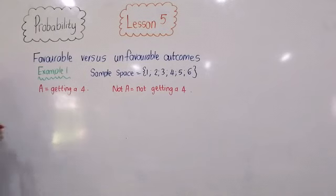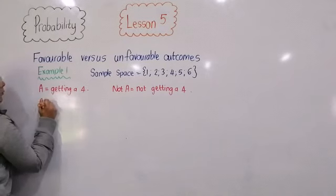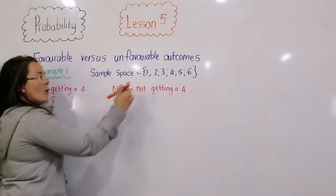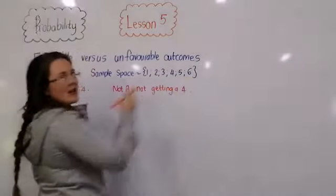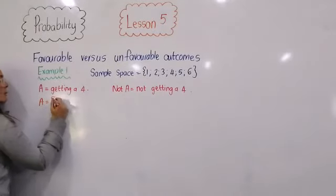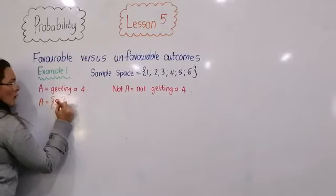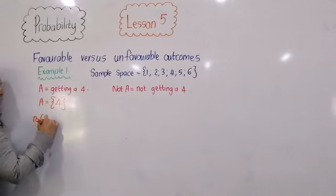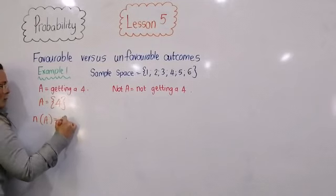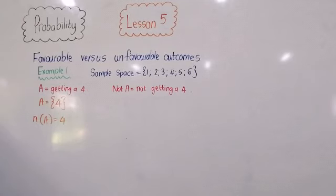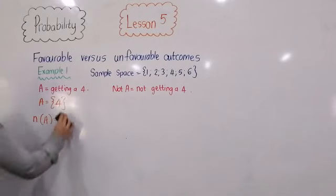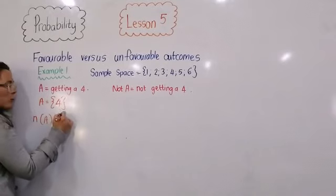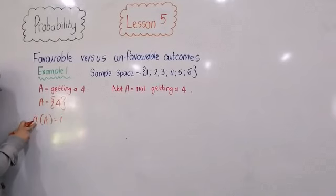If we wanted A, what would fall in our sample space? Our sample space is our one, two, three, four, five, six sides of the dice. So in A, we would only have four. How many outcomes do we have in A? It's not four outcomes — the outcome is four, but there's one outcome. That's the number of outcomes.